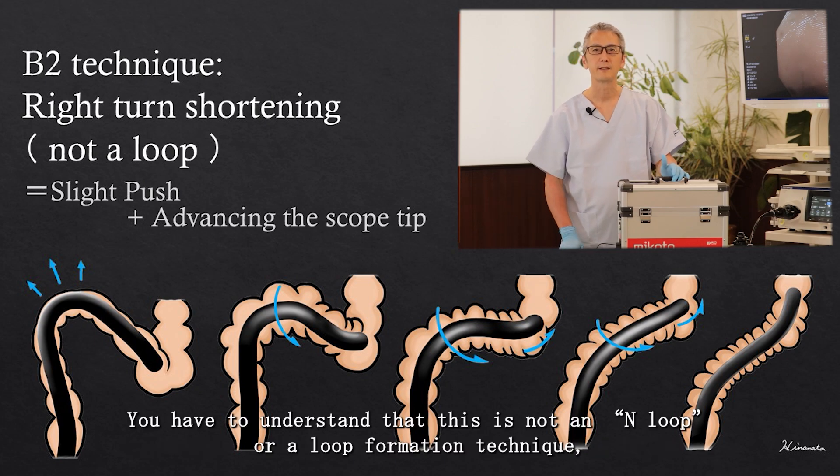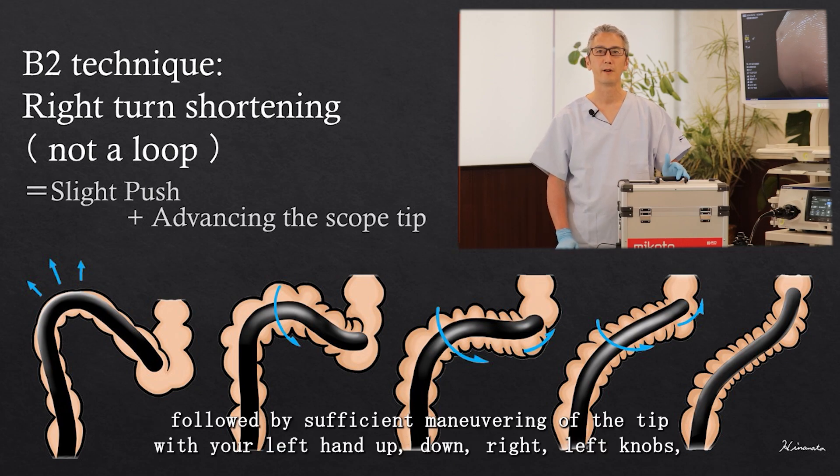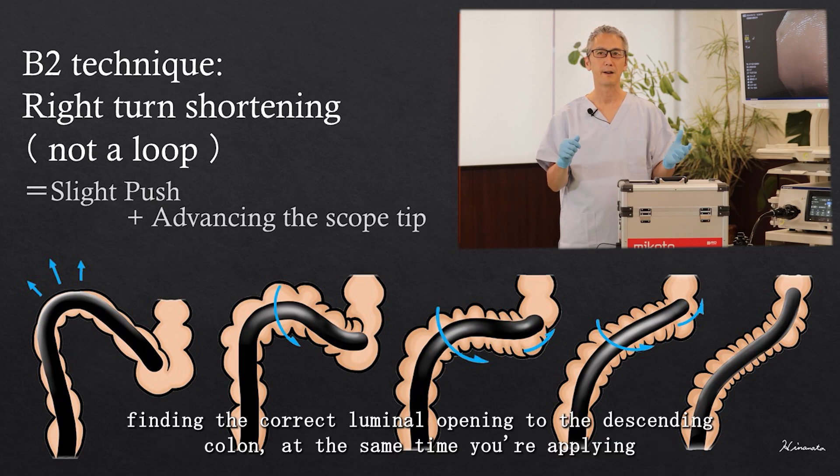You have to understand that this is not an end loop or a loop formation technique, but this is actually a slight push and stretching of the sigmoid colon, followed by sufficient maneuvering of the scope tip with your left hand up, down, right, left knobs, finding the correct lumen opening to the descending colon.